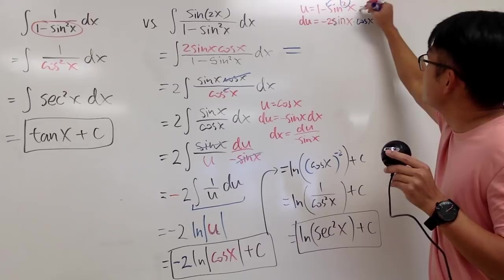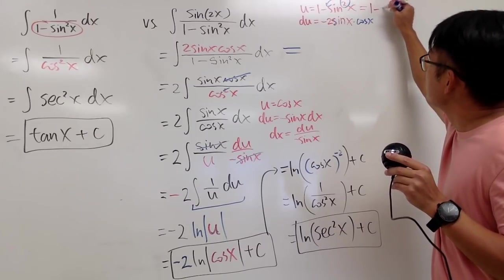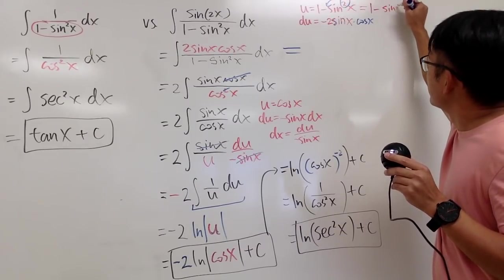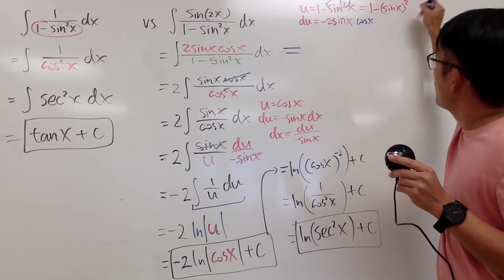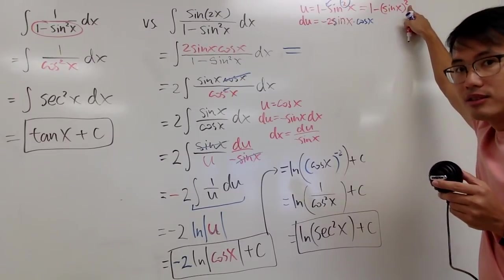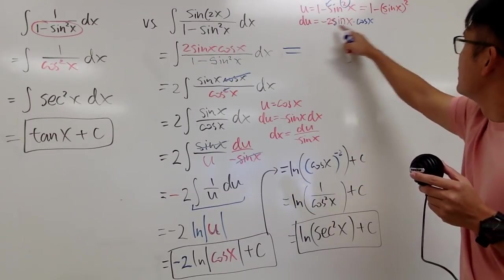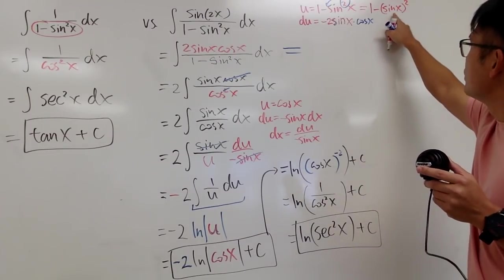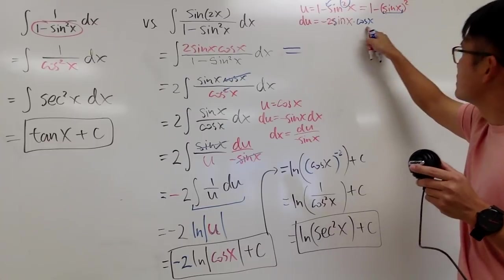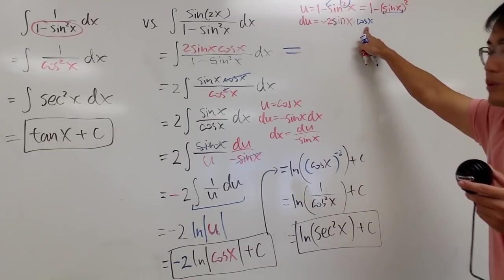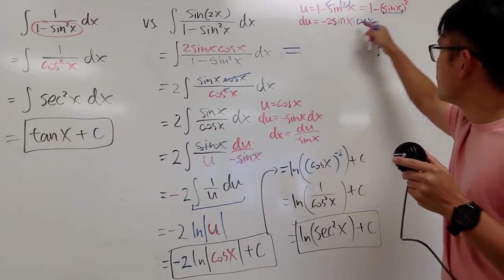Once again, it's because this is the same as 1 minus sine x, all squared. So you brought the 2 to the front, then multiplied by the derivative of sine x — that's how we get the cosine. And that's pretty much it; we put down dx.